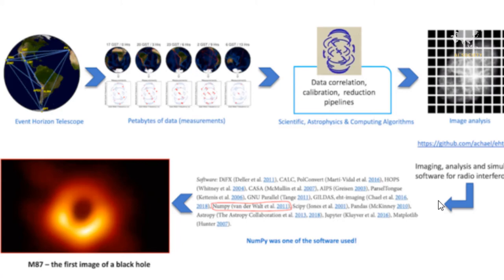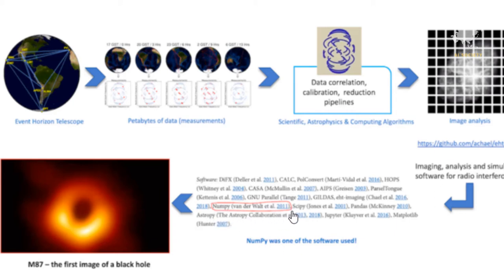This diagram illustrates how Python was used in data analysis of the data produced by EHT. On the left you can see the Event Horizon Telescopes. Next, you can see petabytes of data measurements. Then there is data correlation, calibration, detection, pipeline, scientific astrophysics, and computing algorithms. Highlighted in red, you can see that NumPy, SciPy, Pandas, AstroPy, Jupyter, and Matplotlib were all used — these were the libraries used to capture the first image of a black hole.